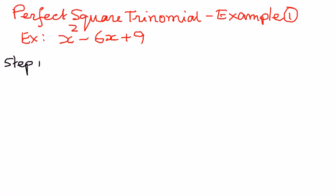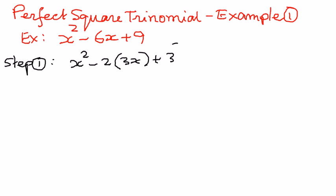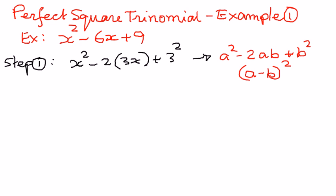Step number one. We can write this as x to the power of 2 minus 2 times 3x plus 3 raised to the power of 2. This is of the form a squared minus 2ab plus b squared. Therefore, if we have a trinomial of this type, we can write it as a minus b, the whole thing raised to the power of 2. So we can write this as x minus 3, raised to the power of 2.